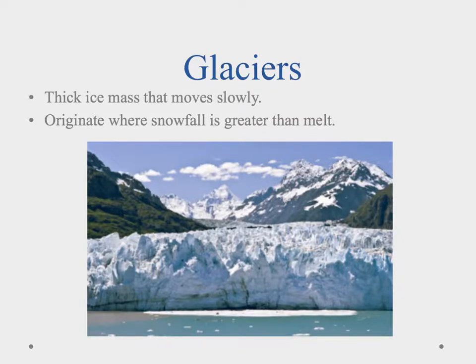To begin, let's discuss what is a glacier. A glacier, quite simply, is a really thick ice mass that moves slowly. They're going to originate in an area where your snowfall is going to be greater than the snowmelt. So you have an accumulation — that's what we'll call this — a zone of accumulation where they form.